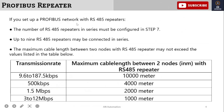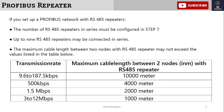If you set up a Profibus network with RS485, the number of RS485 repeaters in series must be configured in Step 7. In a series connection, all VFD drives and controllers must be configured with Step 7 using GSD files or built-in modules. Up to 9 RS485 repeaters can be connected in series.